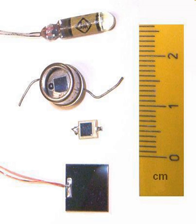A phototransistor is a light-sensitive transistor. A common type of phototransistor, called a photobipolar transistor, is in essence a bipolar transistor encased in a transparent case so that light can reach the base-collector junction. It was invented by Dr. John N. Shive at Bell Labs in 1948, but it was not announced until 1950. The electrons generated by photons in the base-collector junction are injected into the base, and this photodiode current is amplified by the transistor's current gain beta. If the base and collector leads are used and the emitter is left unconnected, the phototransistor becomes a photodiode.